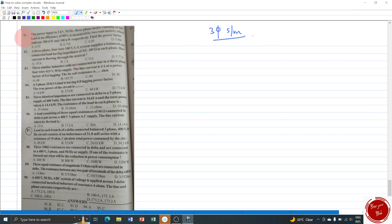Keeping these equations in mind let us try to do the questions. Let us discuss question number 81 to 85 in this video. Question number 81: the power input of a 2 kilowatt 50 hertz three-phase motor running on full load at an efficiency of 90 hertz is measured by 2 wattmeters which indicate 300 kilowatts and 100 kilowatts respectively. Find the power factor.